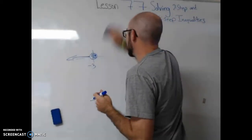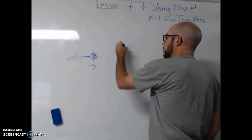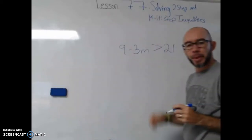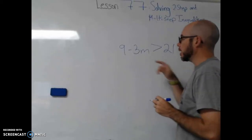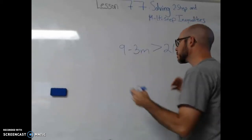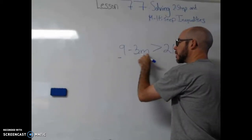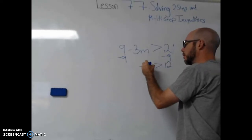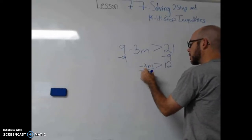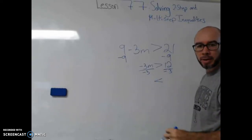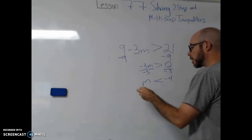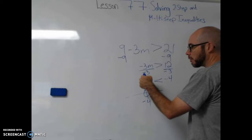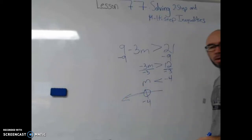Let's look at one that might need that negative rule: 9 minus 3M is greater than 21. If we do this multi-step, we take care of addition and subtraction first, so we subtract 9 from both sides. 21 minus 9 is 12, that leaves us with negative 3M on this side. Then we divide by negative 3 on both sides, which switches the sign around. M is left on this side, and on the other side we get negative 4. We put negative 4 on the number line, open circle, and since the variable is on this side, the arrow goes that way.